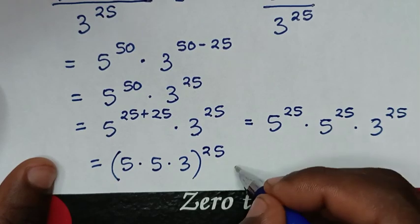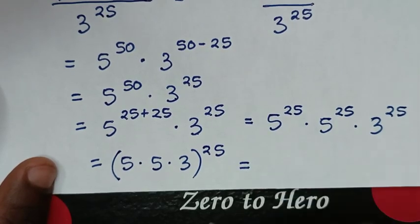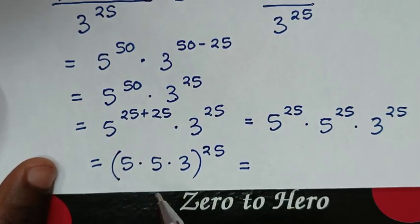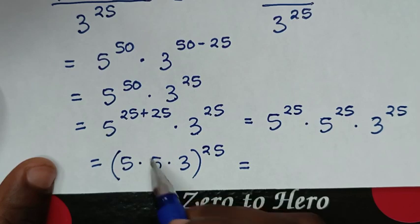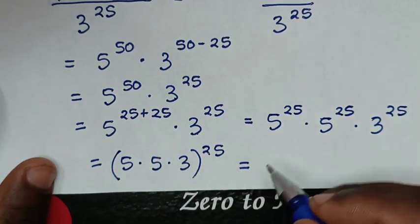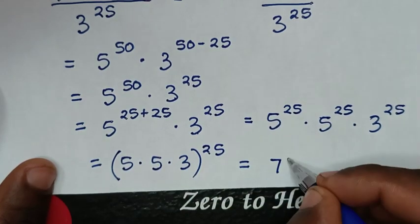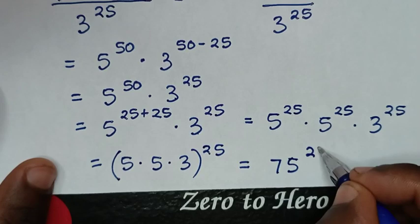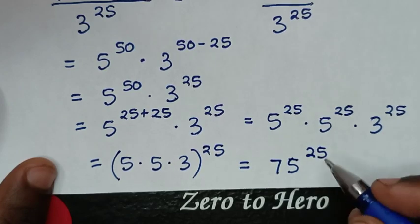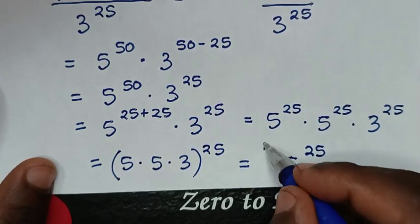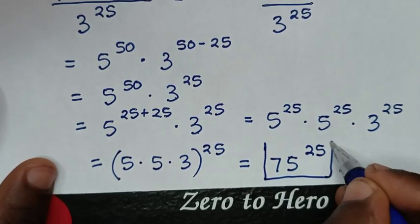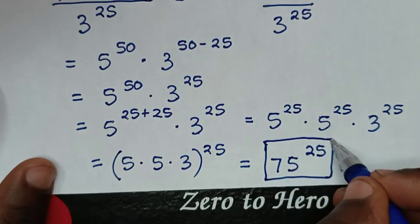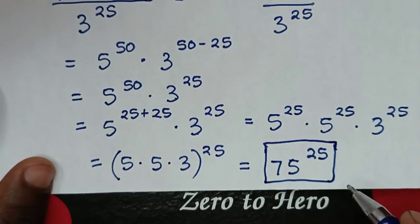Then it will be equal to: 5 times 5 is 25, and 25 times 3 is 75, then power of 25. So 75 power of 25 is our final answer — the same as the answer in the first method.